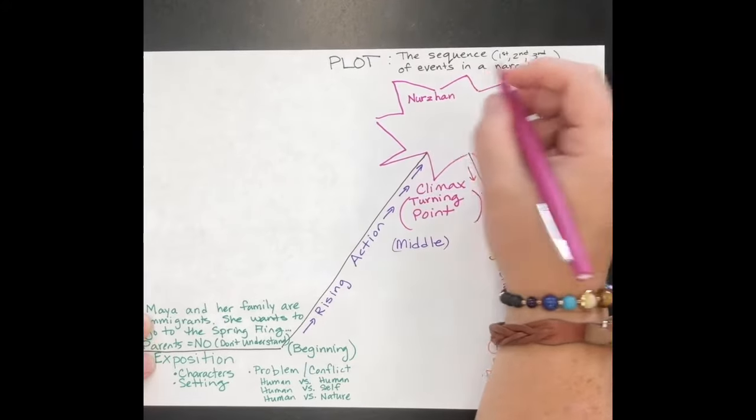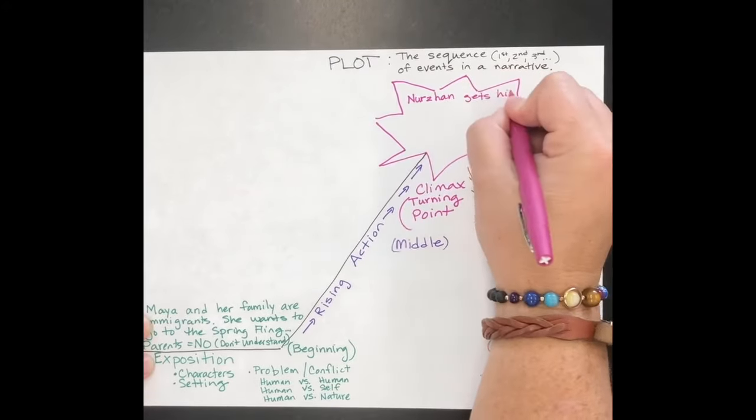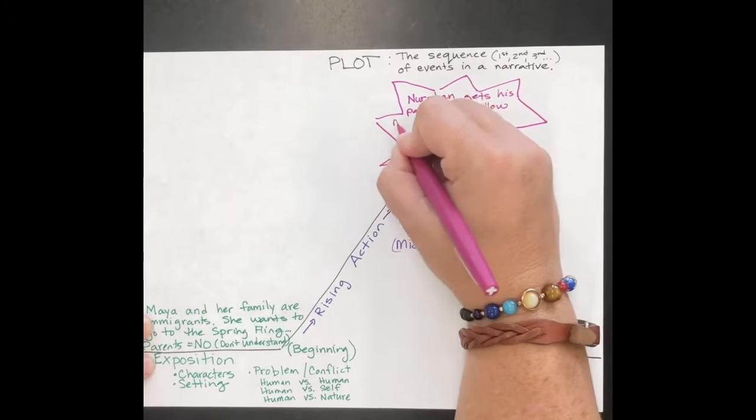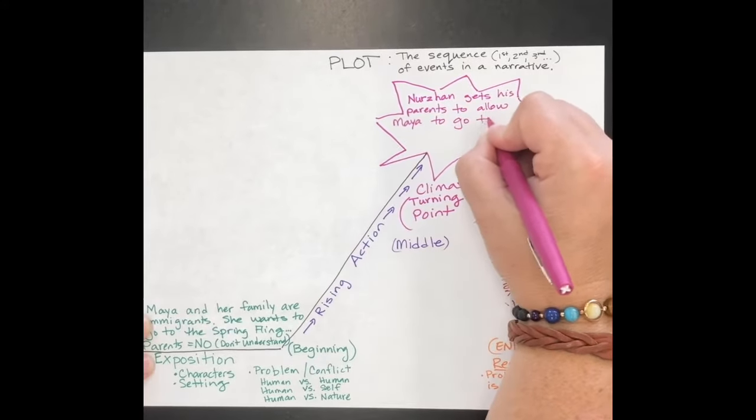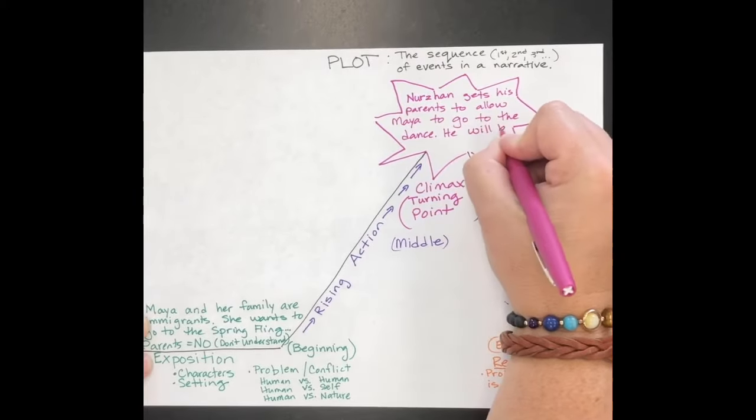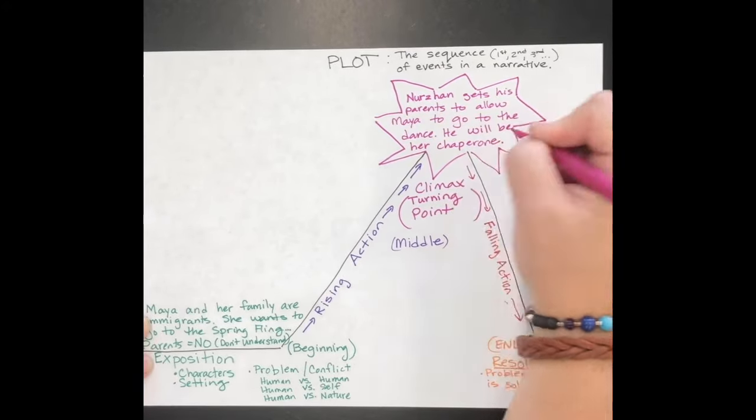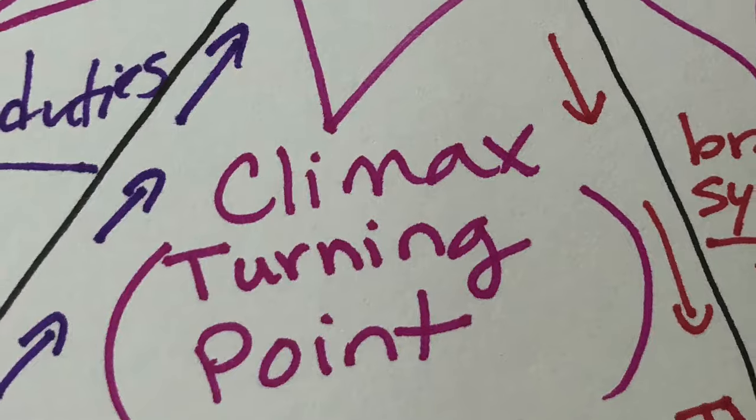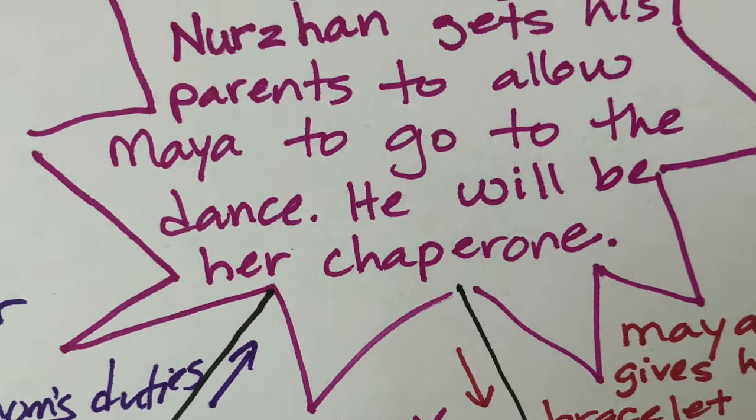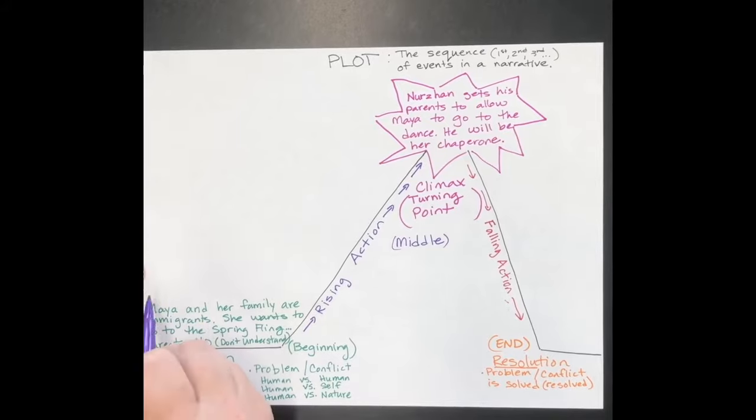The turning point of this story is when Nershon is able to get their parents to give permission for Maya to go to the dance with him as the chaperone. That's the problem or conflict—her wanting to go to the dance. It looks like it's not going to happen, and then suddenly he convinces their parents to let her go if he goes as a chaperone. That's the turning point. It makes it easier to figure out the other parts if we can figure out where the climax is.